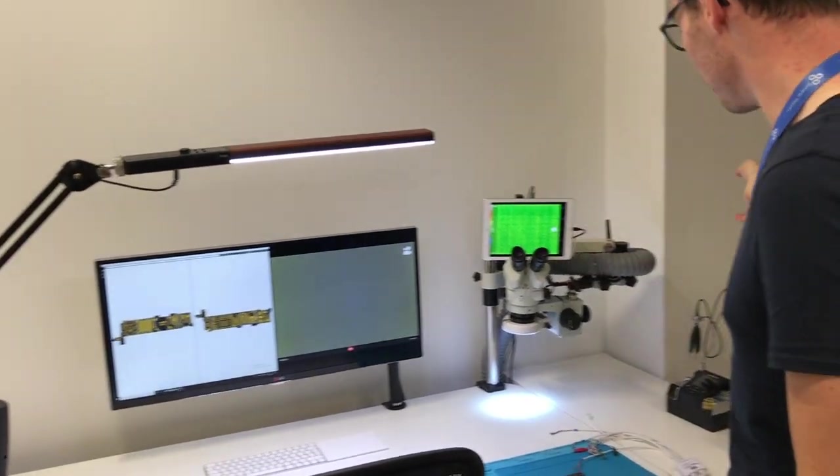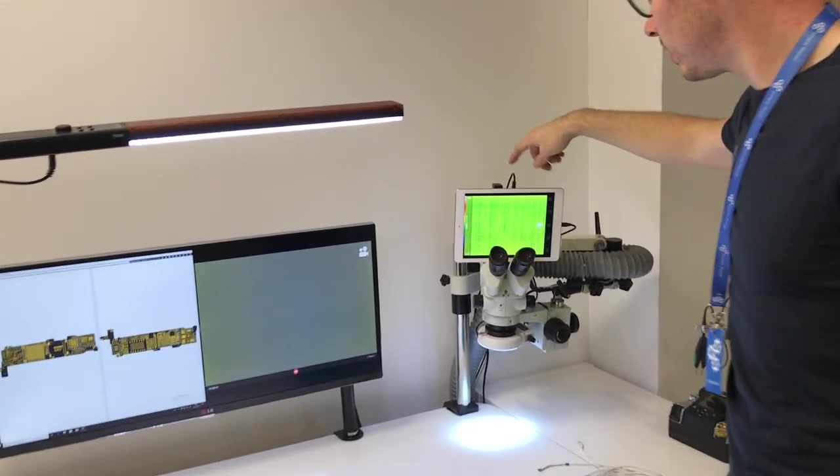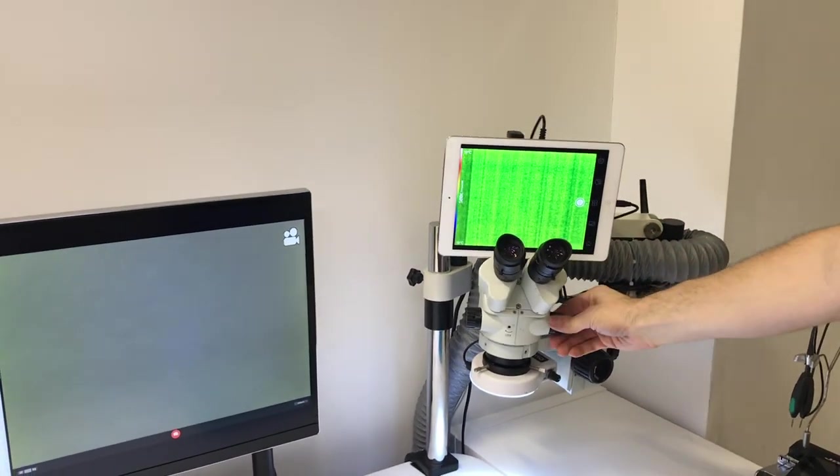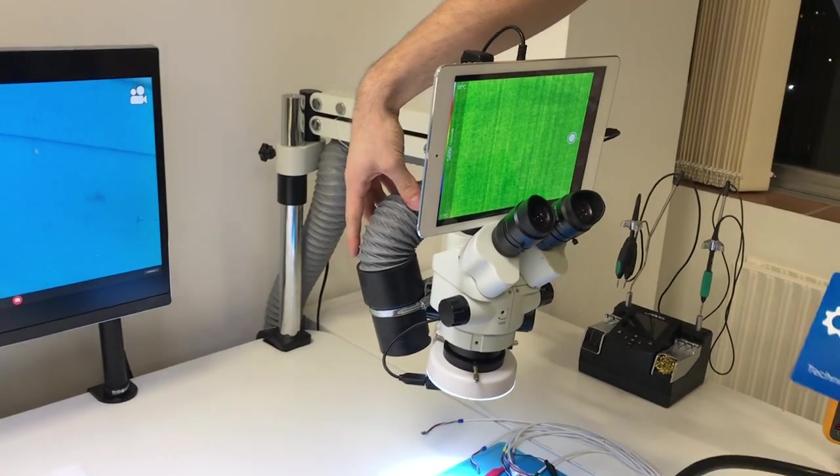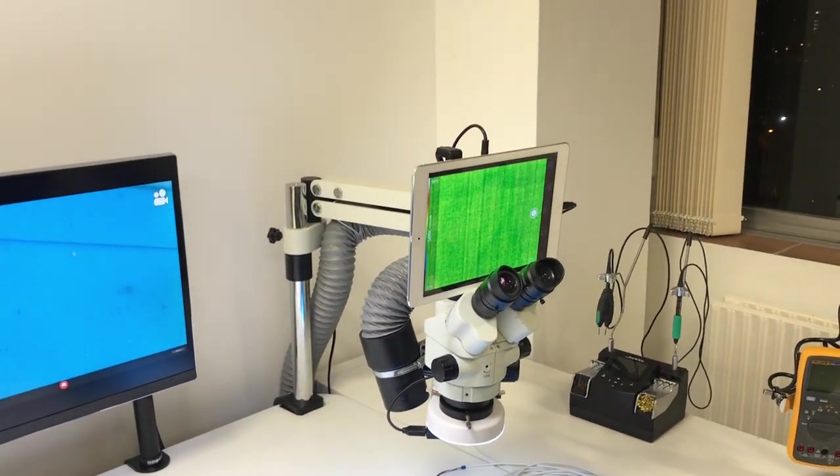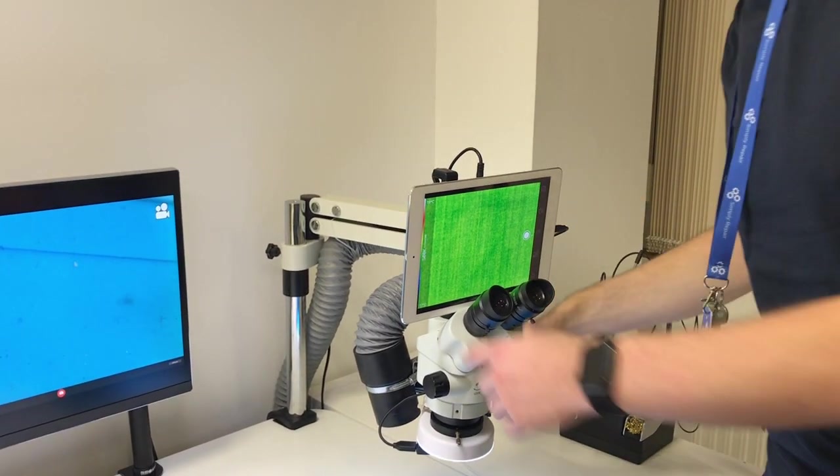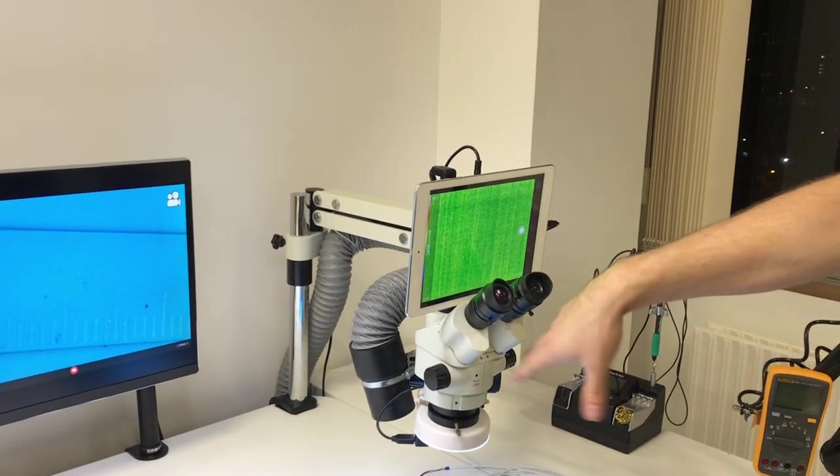So right here is my microscope set up. It's got a microscope camera, an iPad with a thermal camera that I connected to it, and the fume extractor is also on the side of it. So it's nice and neat at all times, not in the way. I've got a lot of space here.